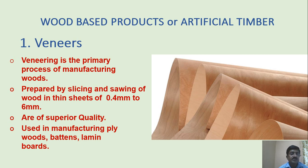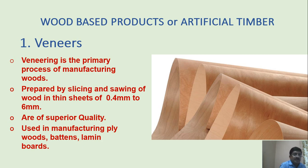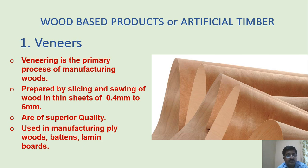Wood-based products or artificial timber. First is veneers. Veneering is the primary process of manufacturing goods, prepared by slicing and sawing of wood into thin sheets of 0.4 mm to 0.6 mm. These are of superior quality and used in manufacturing of plywood, battens, and lamin boards. These are strips of wood that have been extensively sliced.